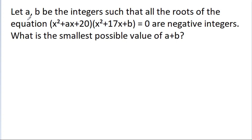In this video, we have given that a, b, d are integers such that the roots of the equation x squared plus ax plus 20 times x squared plus 17x plus b is equal to 0 are negative integers. Then we have to find the smallest possible value of a plus b.